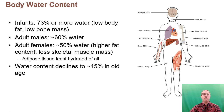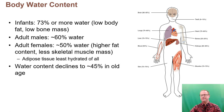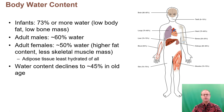If we look at infants, they are almost 73% water, but as they age and become adolescents and adults, the body water goes down. Men are typically 60% body water, and females are typically 50%, because females often have more body fat. The percentage of water goes down even to 45% in older people.